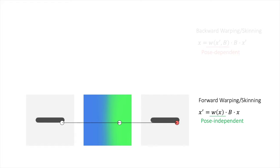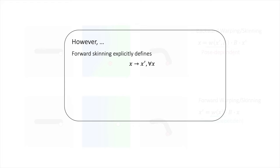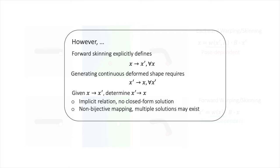While forward skinning defines the mapping from canonical to deformed space, we also require the inverse mapping for learning a shape model in canonical space. As this inverse relation is a one-to-many mapping and as it is only implicitly defined, there exists no closed form solution to it.